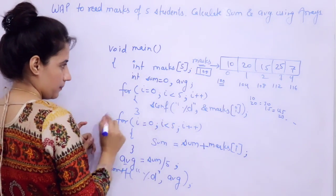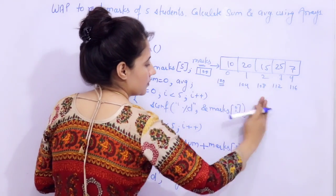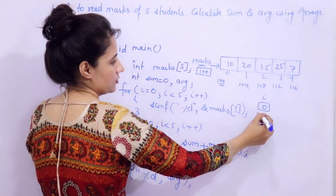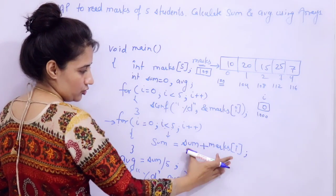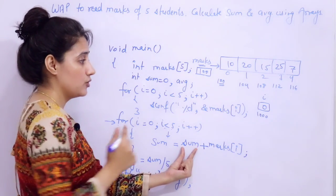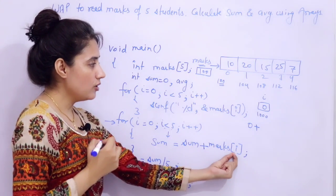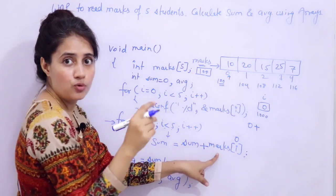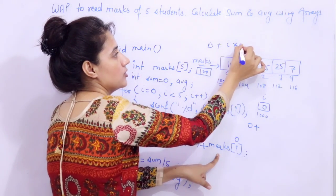Now let's see the working of this program. We have already discussed the working up to the input part. Now for the sum loop: i variable first of all has value 0. Condition is true, we enter the loop. sum = sum + marks[i]. First this right side is calculated. Sum currently has 0, so 0 + marks[0]. Marks is array name, i is 0. marks[0] accesses the first element using the formula: base address + i × sizeof(int). marks[0] gives 10, so 0 + 10 = 10, and 10 is assigned to sum.